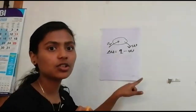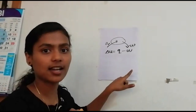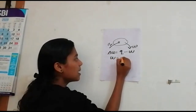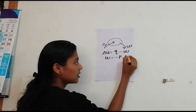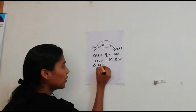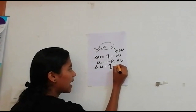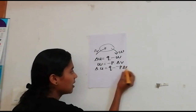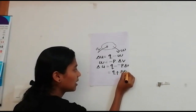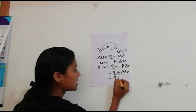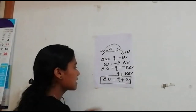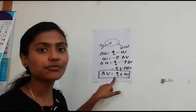Considering work done in the environment, we write delta U equal to Q minus P delta V, and equivalently Q plus P delta V, that is Q plus W. This is the mathematical representation for the first law of thermodynamics.